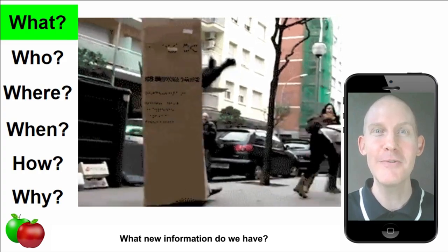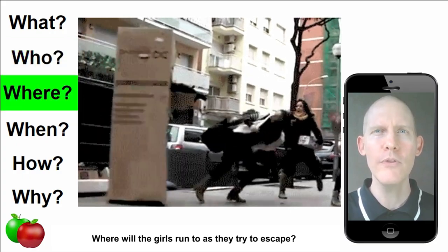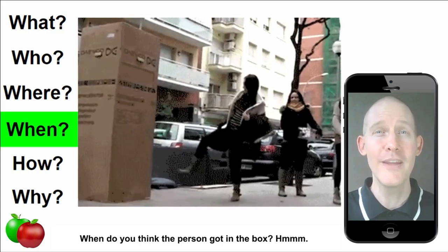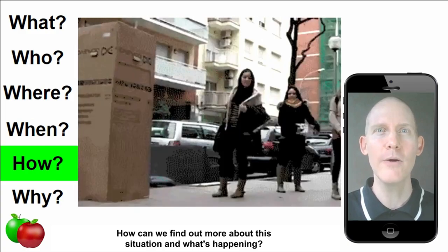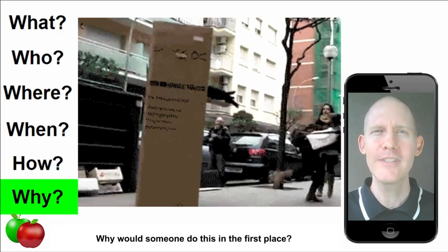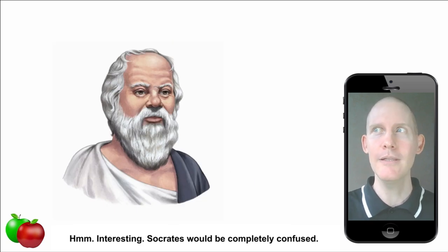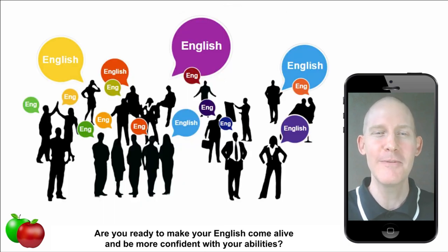What new information do we have? Who do you think is inside the box? Where will the girls run to as they try to escape? When do you think the person got in the box? How can we find out more about this situation and what's happening? Why would someone do this in the first place? Interesting — Socrates would be completely confused!